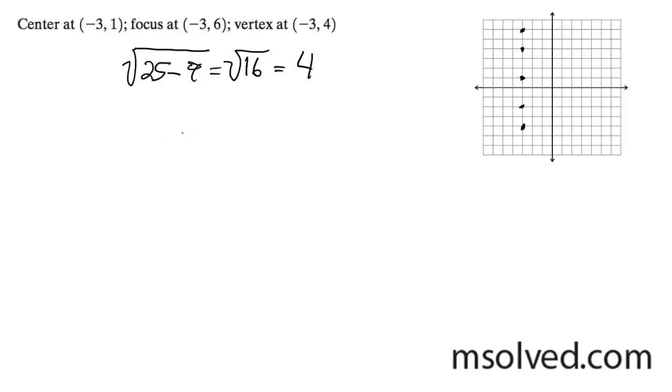And then what we're going to do next is, well, we know what b is now, so we can go ahead and write the equation. So x is over to the left 3, so it's plus 3 squared. Oops, take that back.